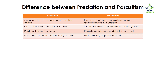In predation, there is a lack of any metabolic dependency on prey. The predator is not dependent on the prey for metabolic reactions such as breakdown of glucose, generation of energy, or making new cells. In parasitism, the parasite is dependent on the host — it takes the host's machinery to make its own cells, generate energy, and perform other functions. So parasites are metabolically dependent on their host.